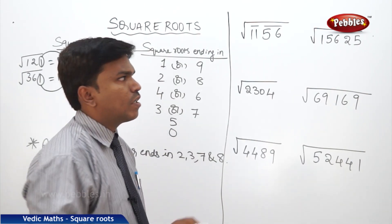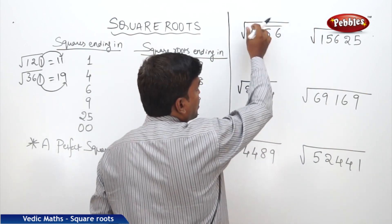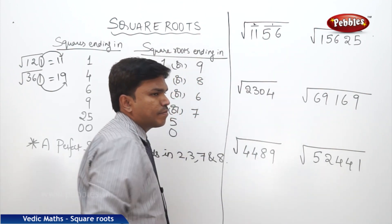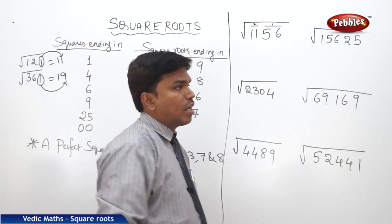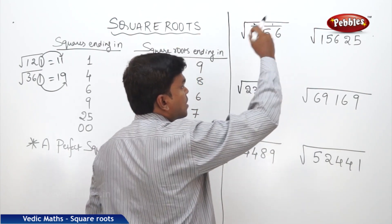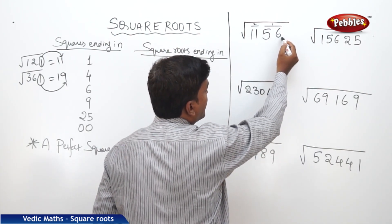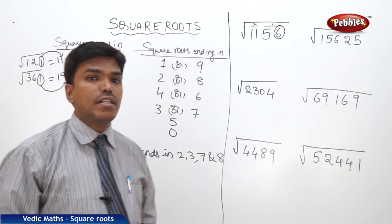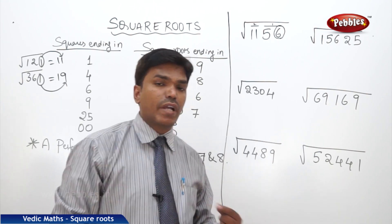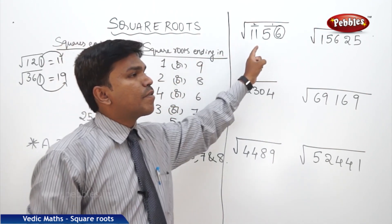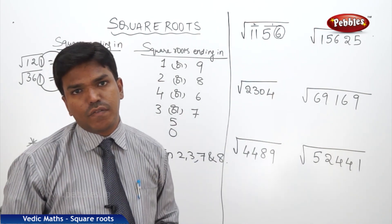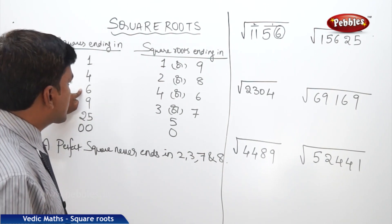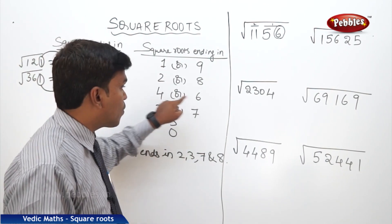Second step: after partitioning the number, from the right side this is the first partition and this is the second partition. Now, look at the end digit of the square number. The square number which is given under the root is ending in which digit? It is ending in 6. If a square number is ending in 6, its square root should end in either 4 or 6.